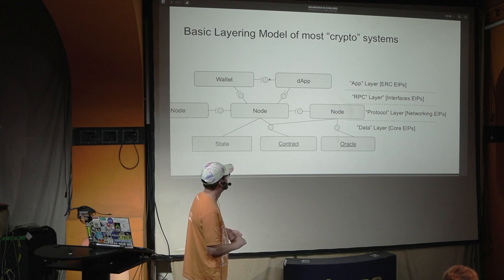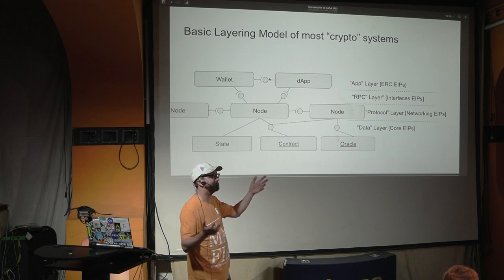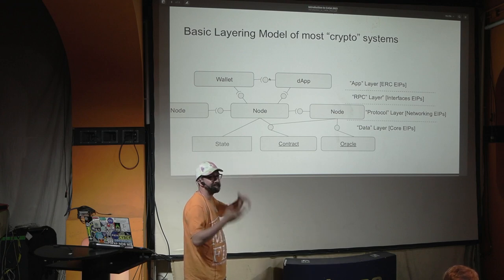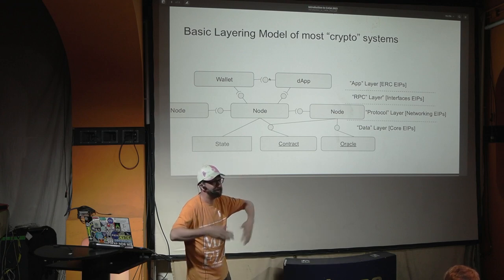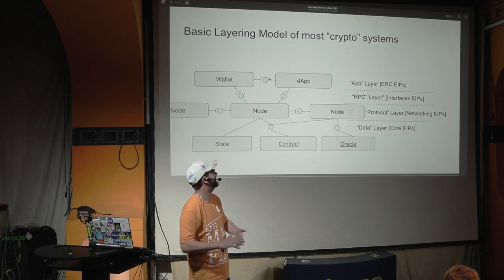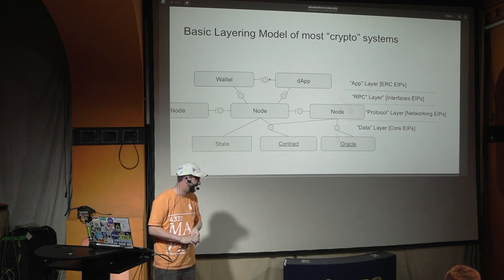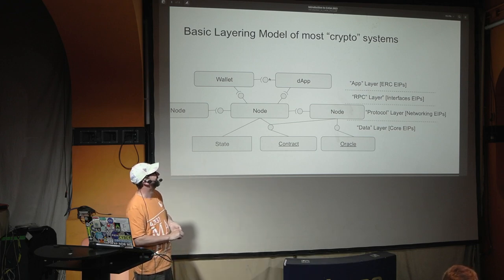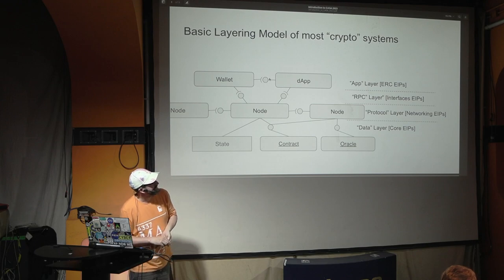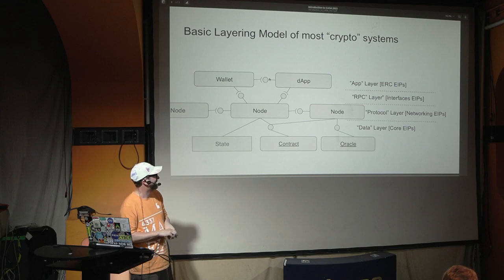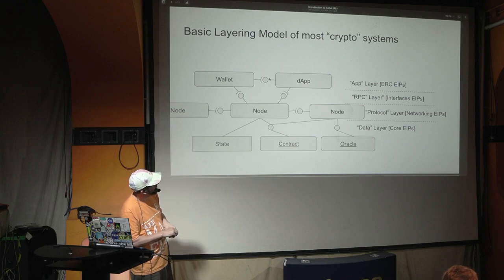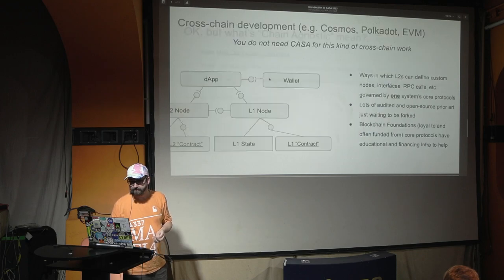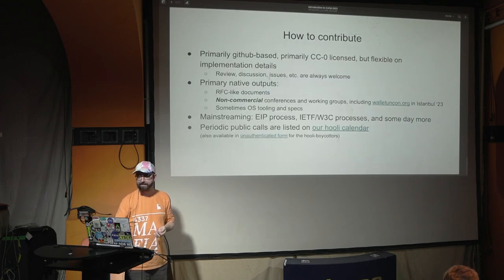CASA doesn't have that labor problem because we did the pass-around half-time funding thing early. We have the chain-agnostic.eth ENS if anyone wants to donate to keep events running.